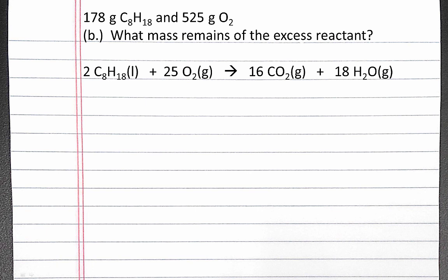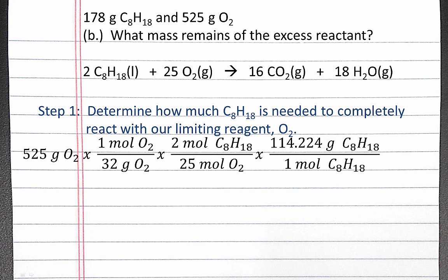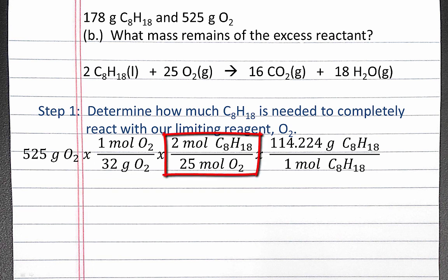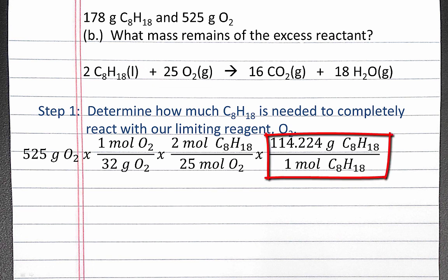In Part B, we want to know how much of the excess reactant remains. For this calculation, our first step is to determine how much octane C8H18 is needed to completely react with our limiting reagent oxygen gas. We'll start our dimensional analysis with our grams of oxygen and convert to moles of oxygen using the molar mass. Then we convert from moles of oxygen to moles of C8H18 using stoichiometry and the coefficients in the balanced chemical equation, and then convert from moles of C8H18 into grams of C8H18.